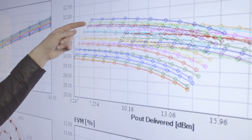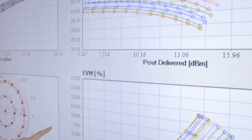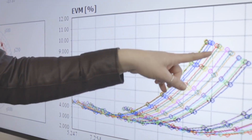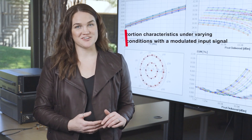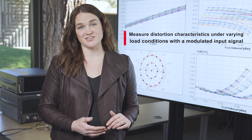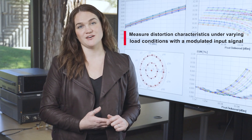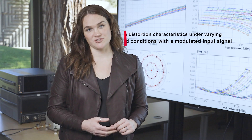We have gain versus power out and the bathtub characteristic — EVM versus power out — as a function of varying load impedances with a modulated input signal. Now with the same connection that you would use to measure S-parameters, gain compression, and noise figure, you can measure the distortion characteristics of your amplifier under varying load conditions with a modulated input signal.